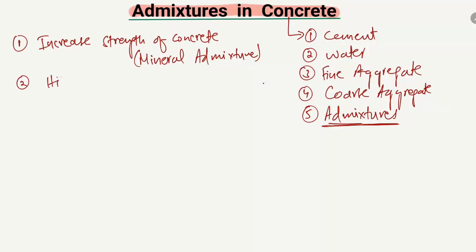The second property is that admixtures are used to increase the workability of concrete. Concrete achieves higher workability by using admixtures. The type of admixture used to increase workability is the chemical admixture.